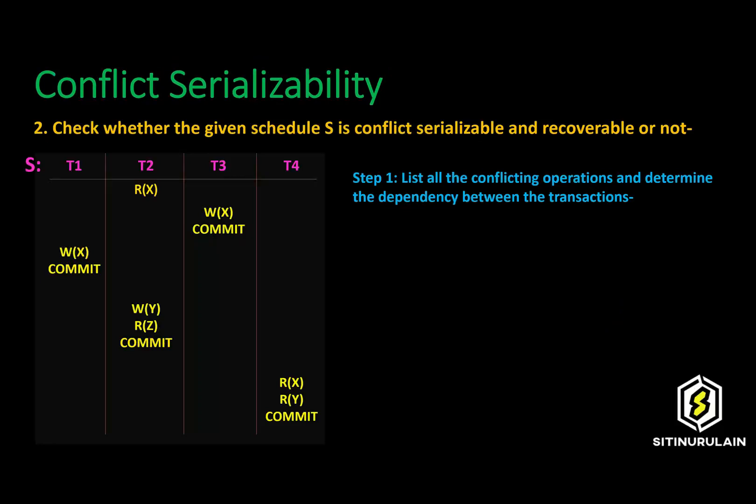In the second question, check whether the given Schedule S is conflict serializable and recoverable or not. The first step is to list all the conflicting operations and determine the dependency between the transactions. There are six conflicting operations in Schedule S. The first operation is read item X for transaction 2 and write item X for transaction 3.